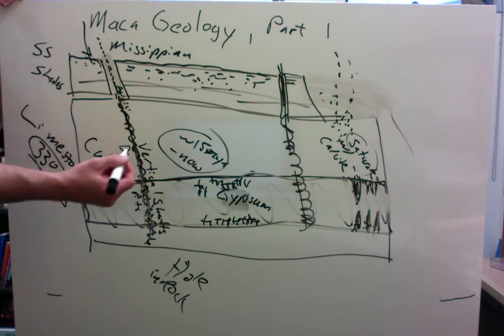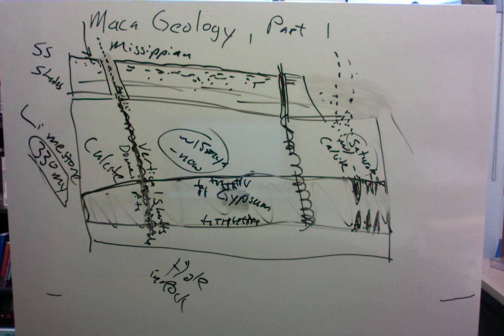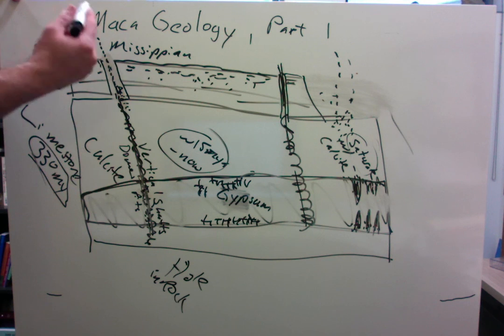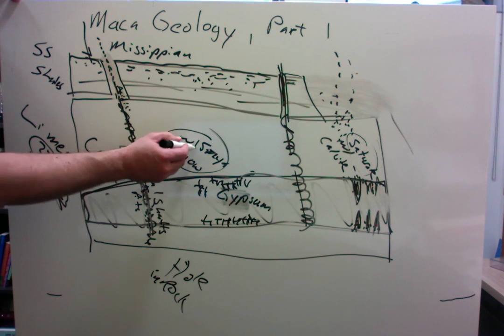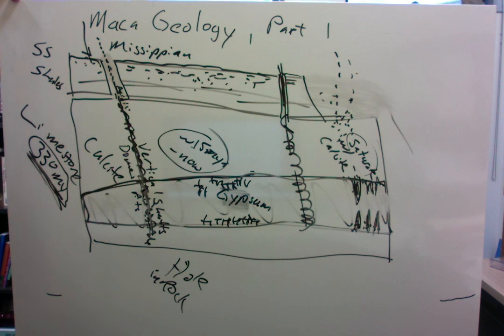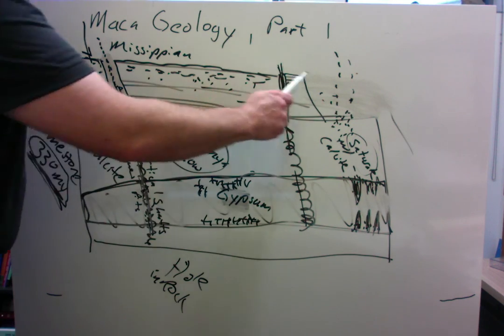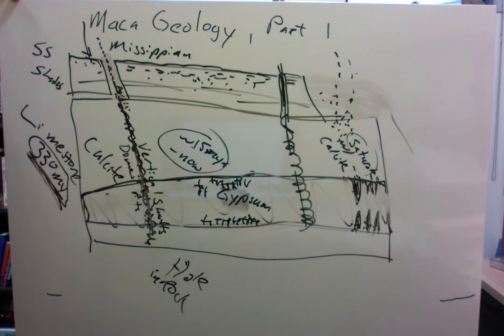And so this is just some basics of things to look for, things to know about. With all caves, and the timeline of Mammoth Cave, 330 million year limestone, 15 million year to present cave formation. And when you're in the cave, you can tell what's happening on the surface by what you see in the cave itself. And so that's going to be it for this first lecture.